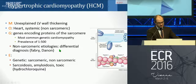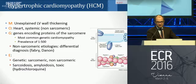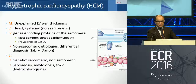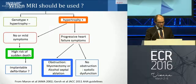There are also non-sarcomeric etiologies, which are mainly differential diagnoses of the disease, like Fabry and Danon disease. The hypertrophy could also be due to etiologies other than genetic, mainly differential diagnoses such as amyloidosis, sarcoidosis, or toxic etiology.